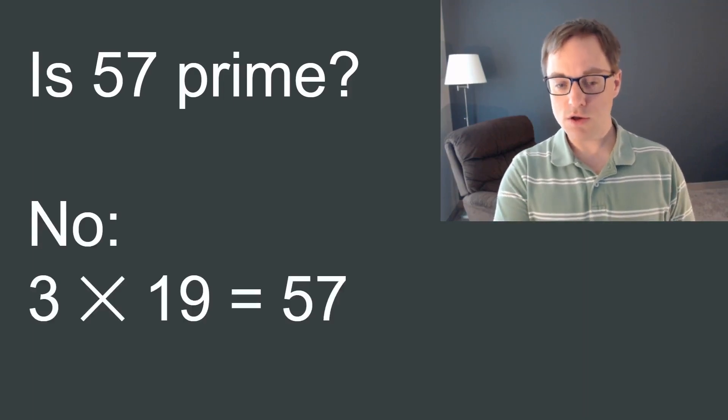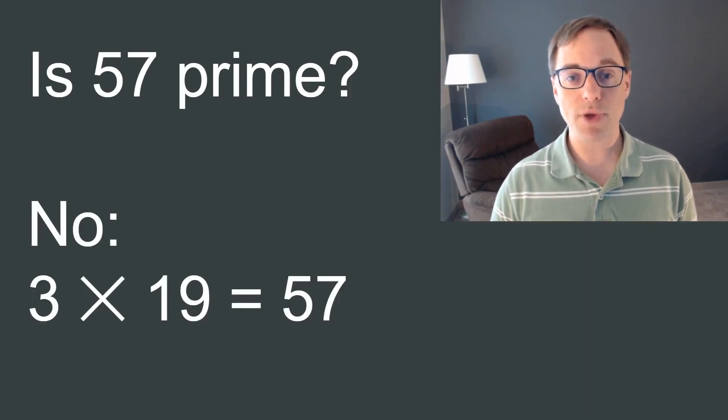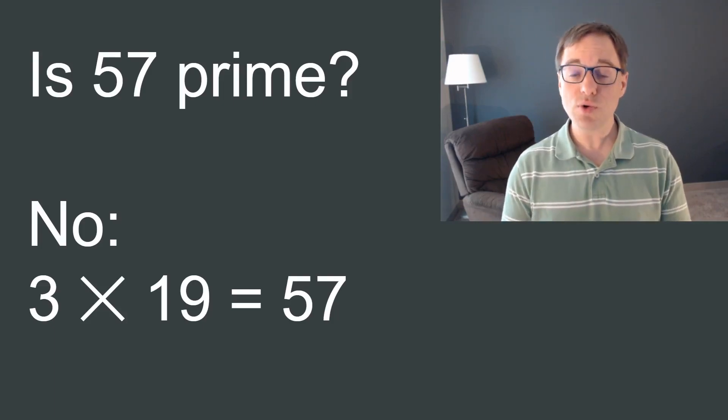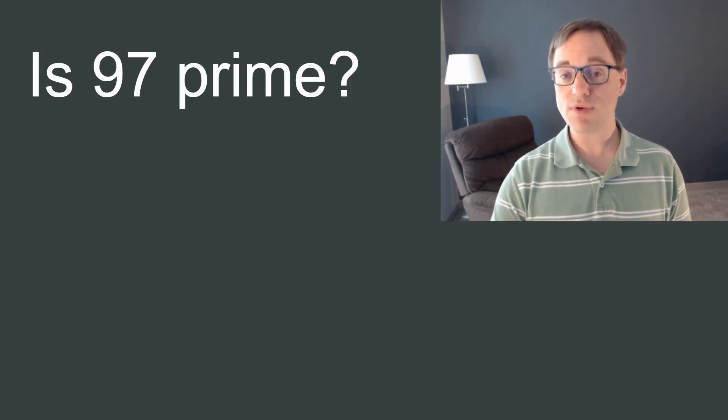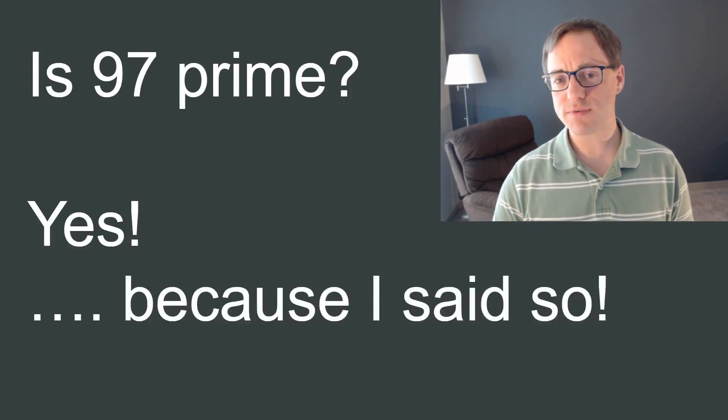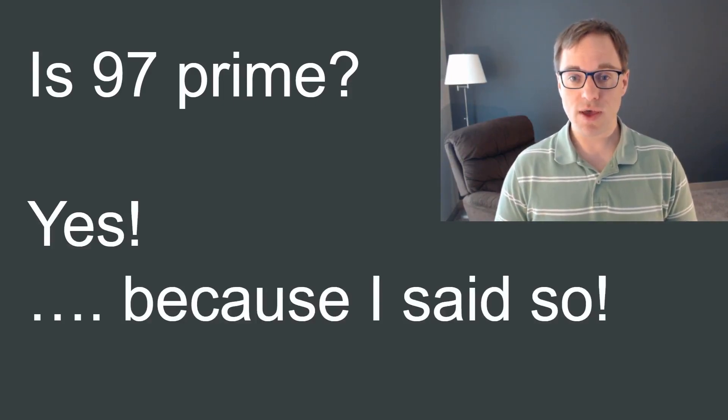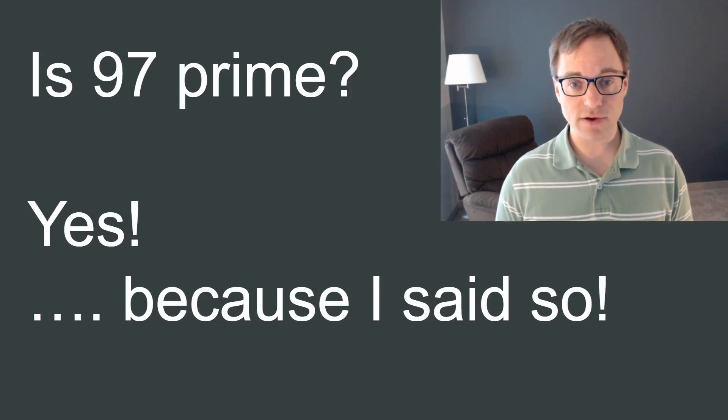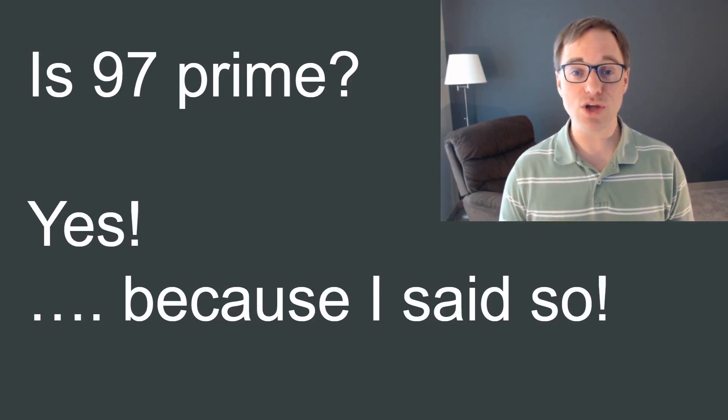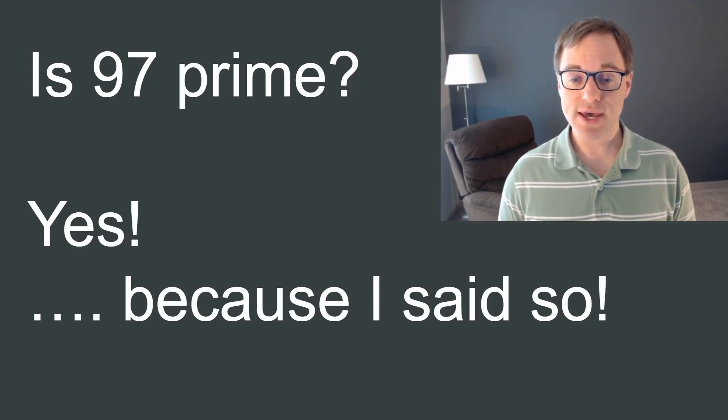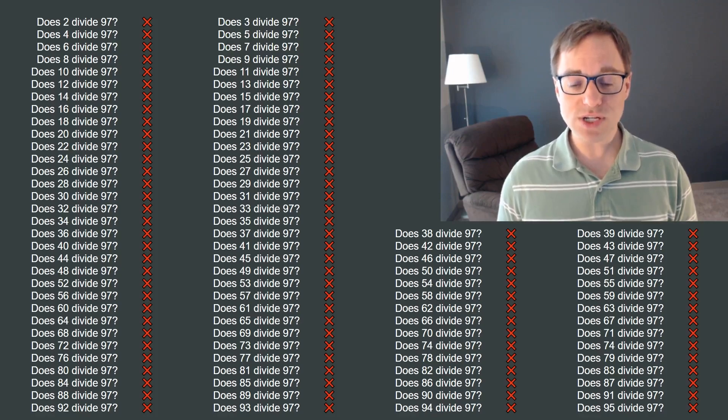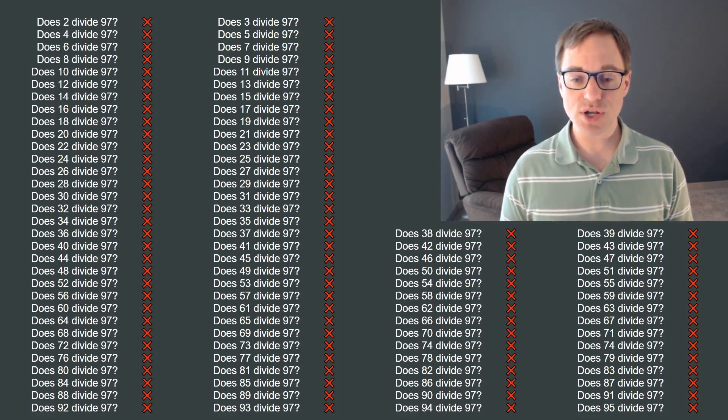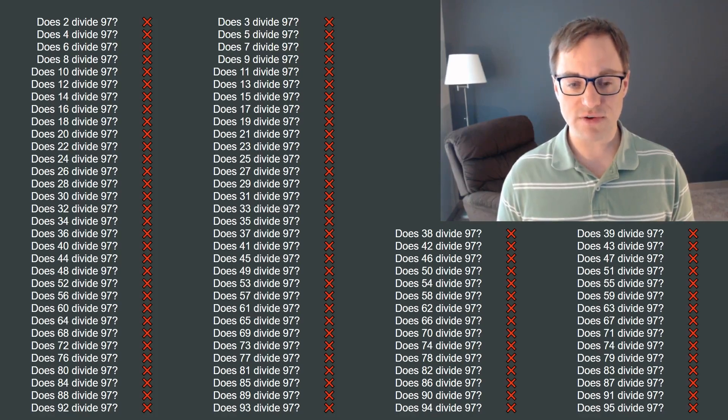Is 57 prime? Nope. 3 times 19 is 57, so 57 is not prime. But whether you had to think about that for a moment or knew it immediately, once you're given either 3 or 19 as a divisor, it's trivial to verify. What about 97? Well, the answer is yes, but how do we prove it? There's an asymmetry to the problem that we're trying to solve. Showing that a number is composite amounts to finding just a single factor pair. But proving a number is prime means proving that no such pair exists. And in general, proving that something doesn't exist is a very difficult thing to do.